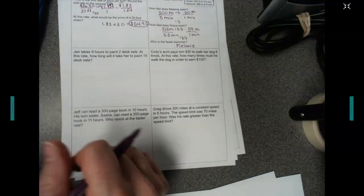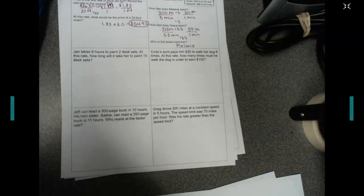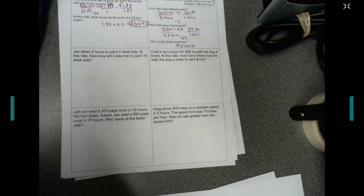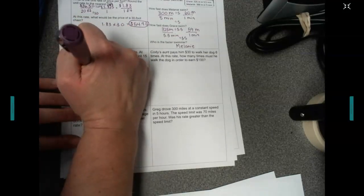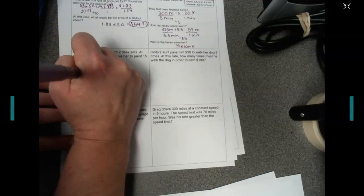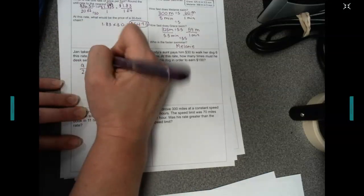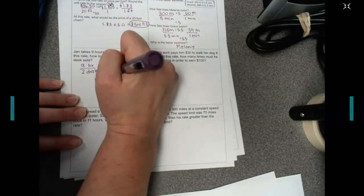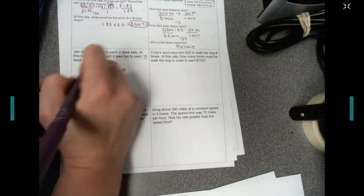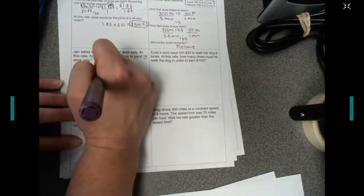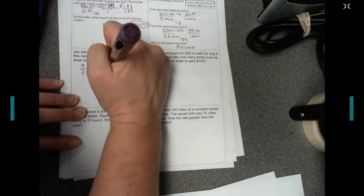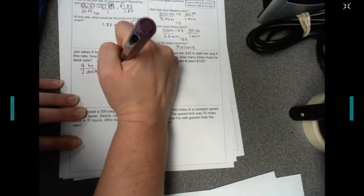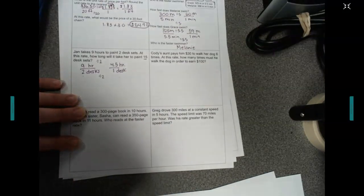Let's look at question 3. Jan takes 9 hours to paint 2 desk sets. At this rate, how long will it take her to paint 15 desk sets? So, 9 hours, 2 desks. We need to get this down to 1 desk so that way we can multiply it by 15. To get to 1, we're dividing by 2. And we're going to divide by 2 on top. 9 divided by 2 is 4.5. So, it takes her 4.5 hours to do 1 desk.